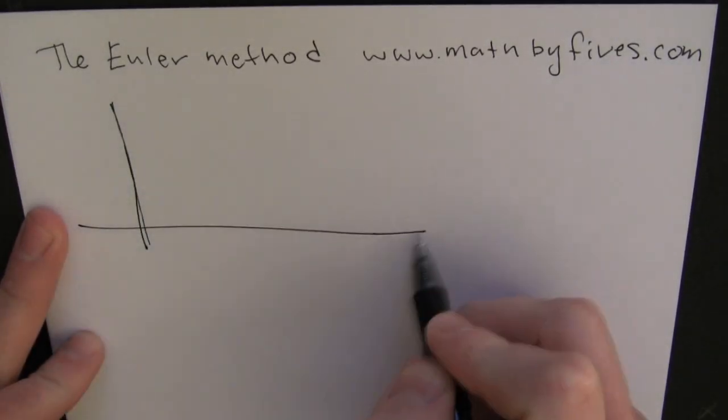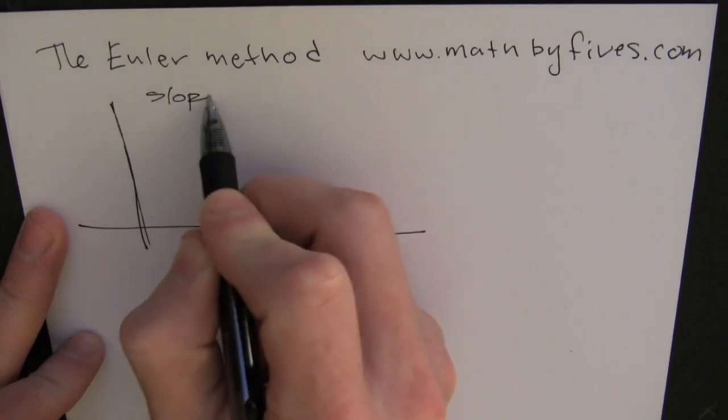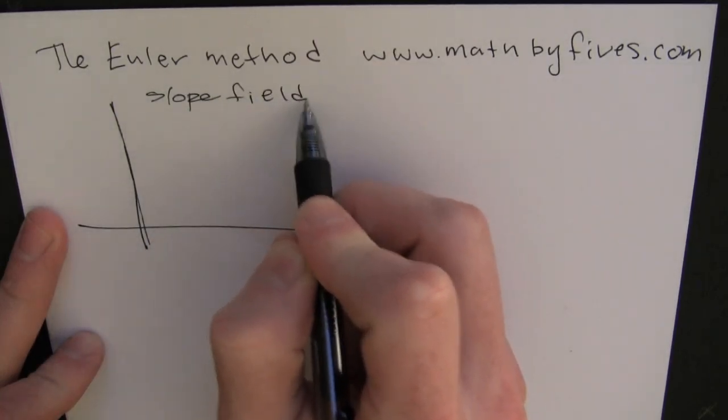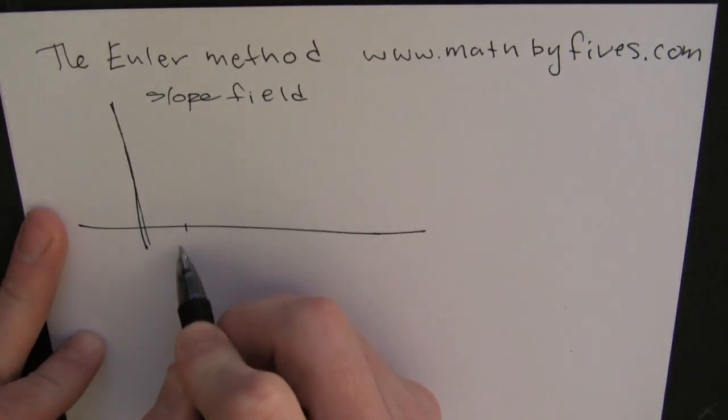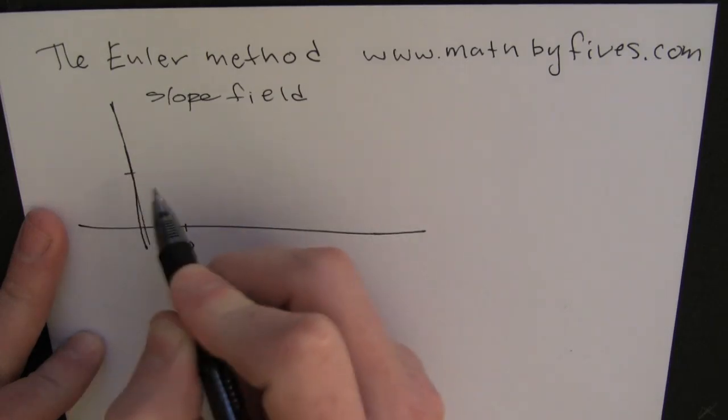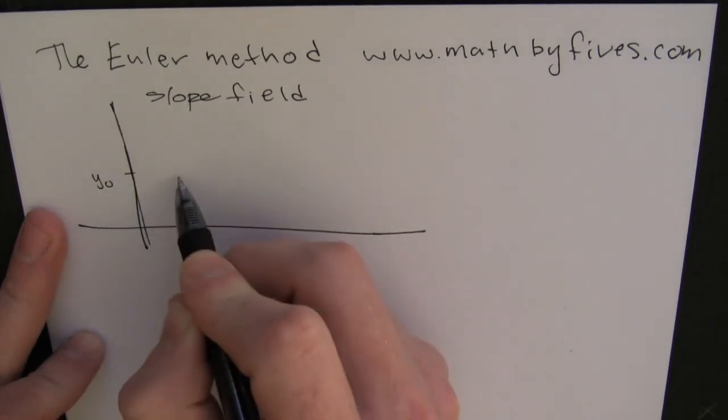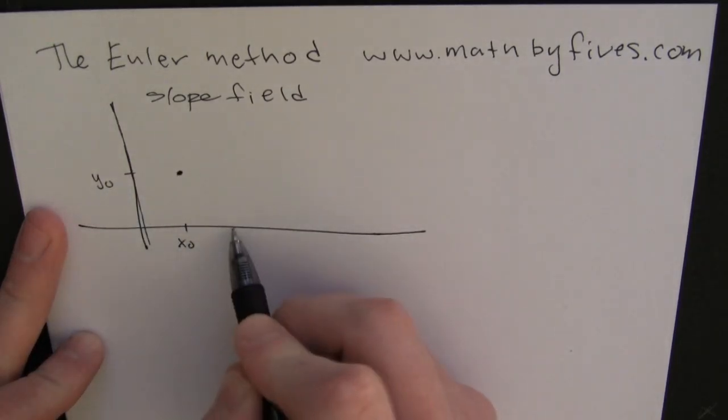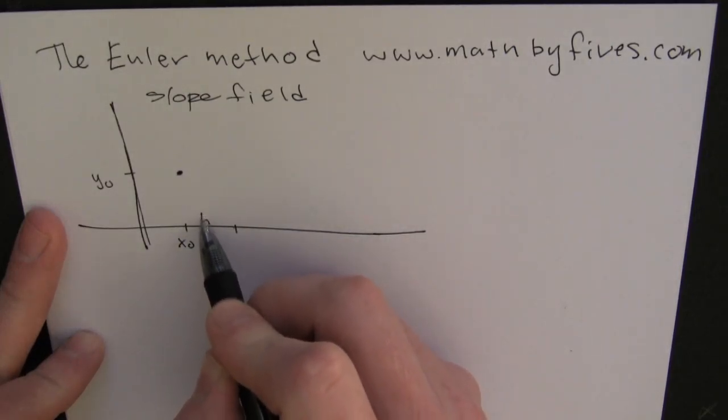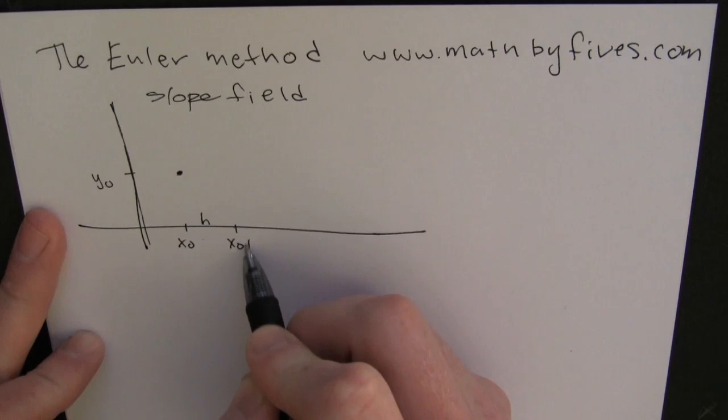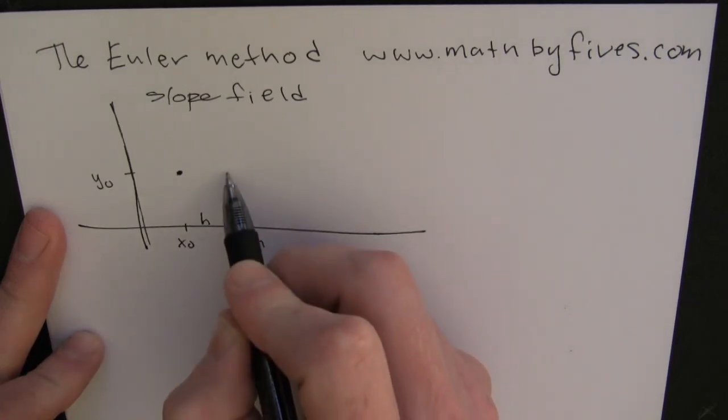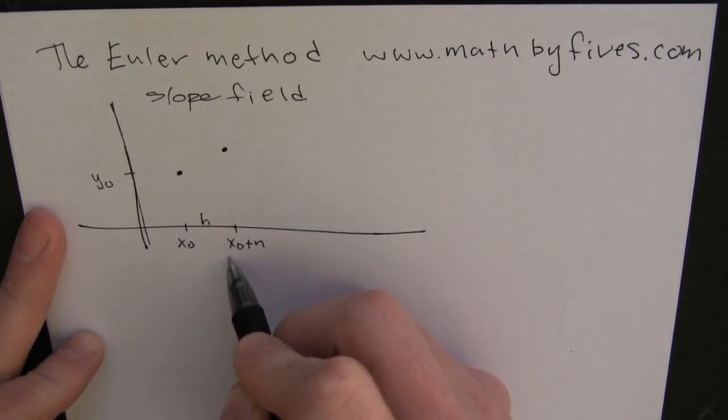What I'm doing is I'm writing a nice little slope field where I'm going to have some input values. My first input value is x naught, y naught. Now I'm defining some distance far enough away, h far away in x, and I want to find my new y. Let's see how we're going to do that.